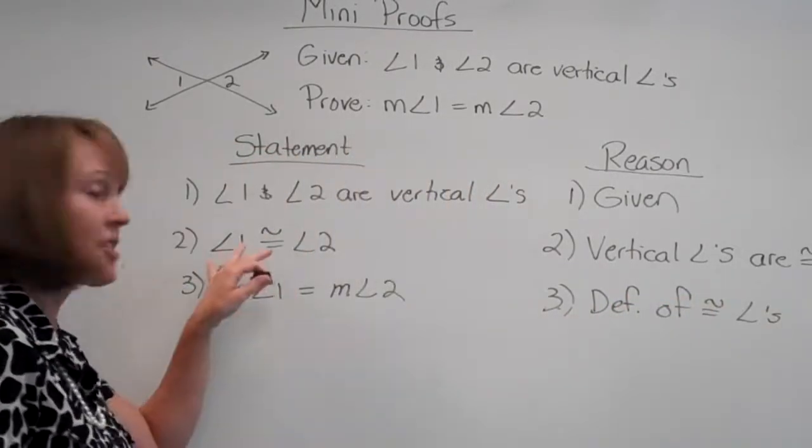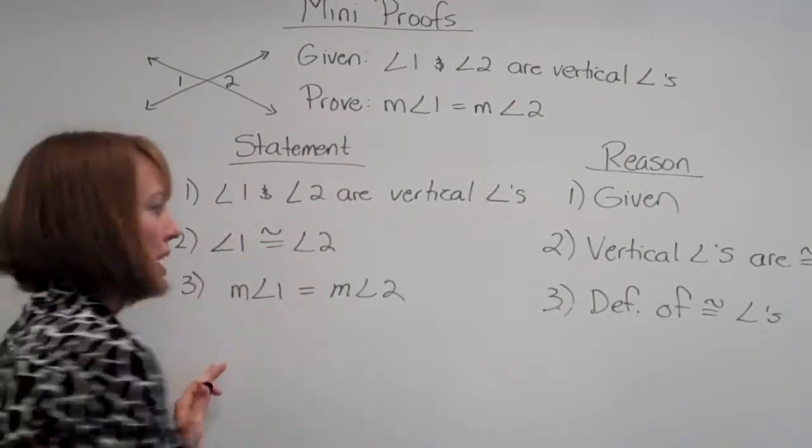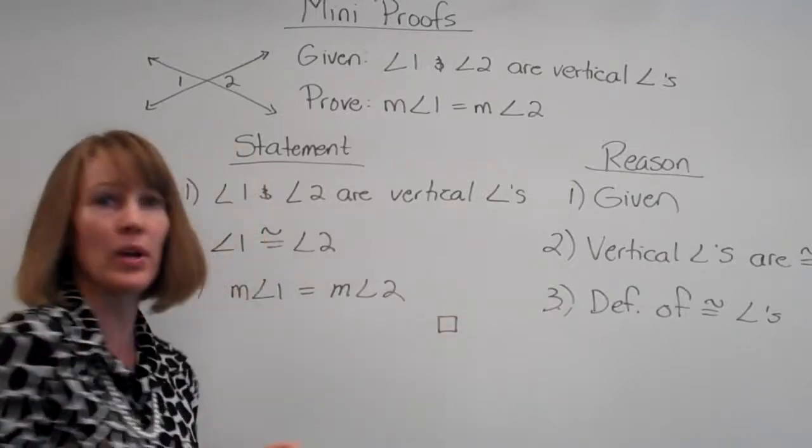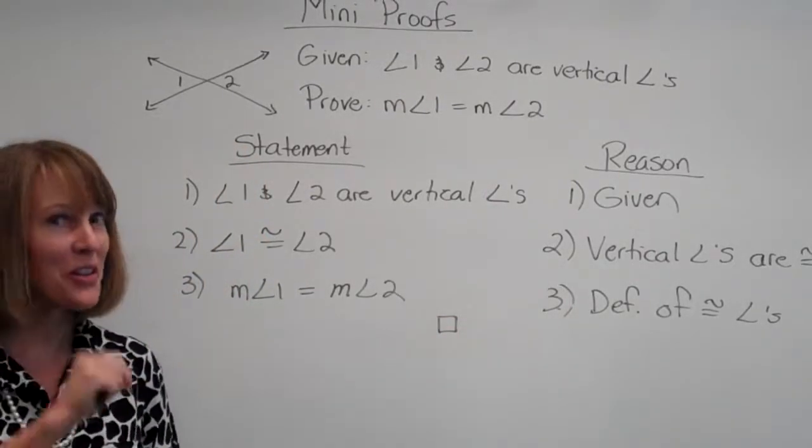Remember, if the things are congruent, then the measures are equal. That's all we need. We've proved what they said. We can put our little finality box, meaning we are done, and you've done your first mini proof. And remember, you know you love math.